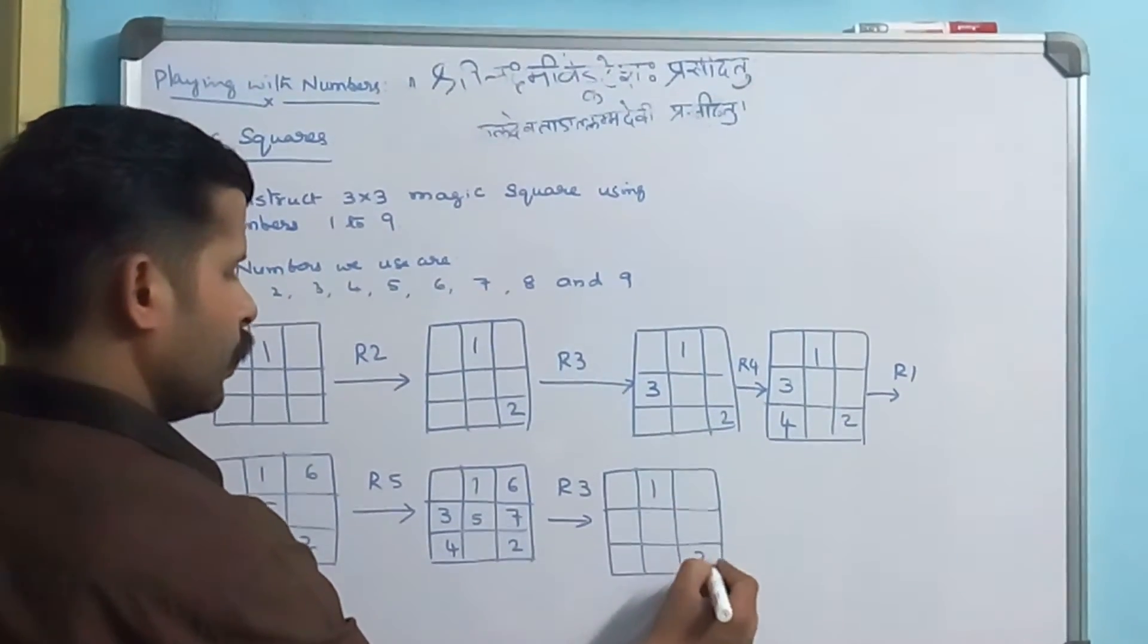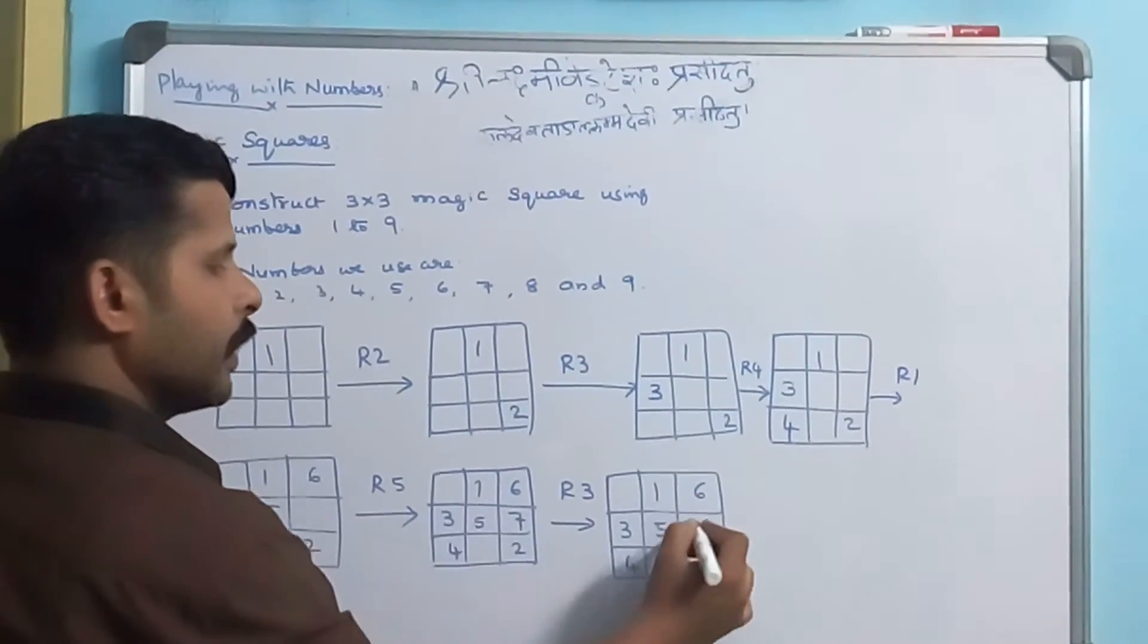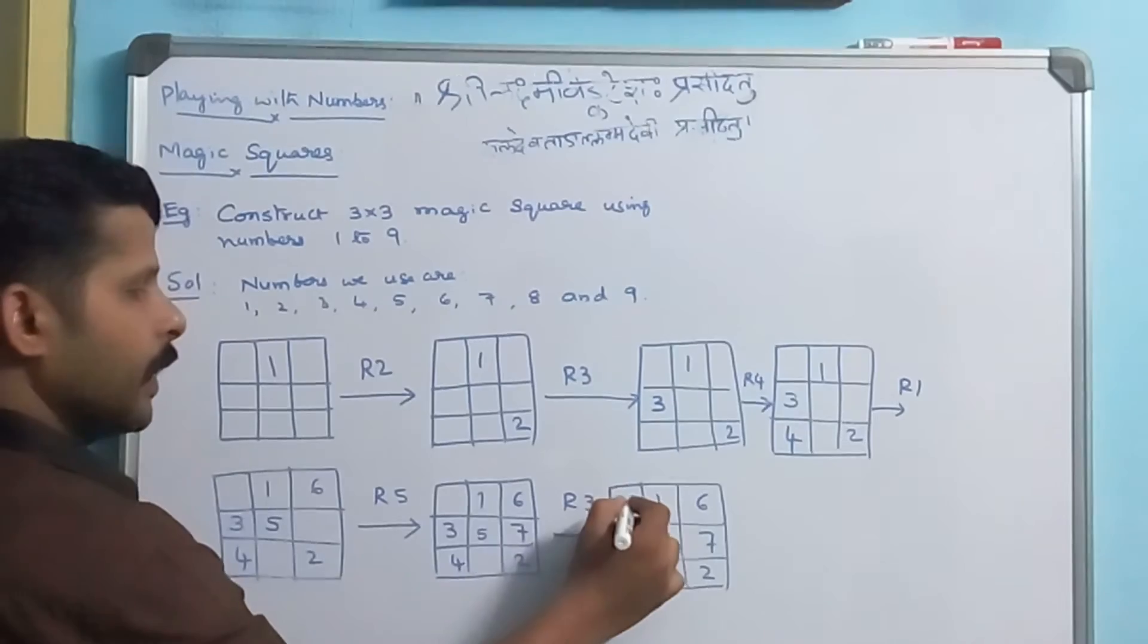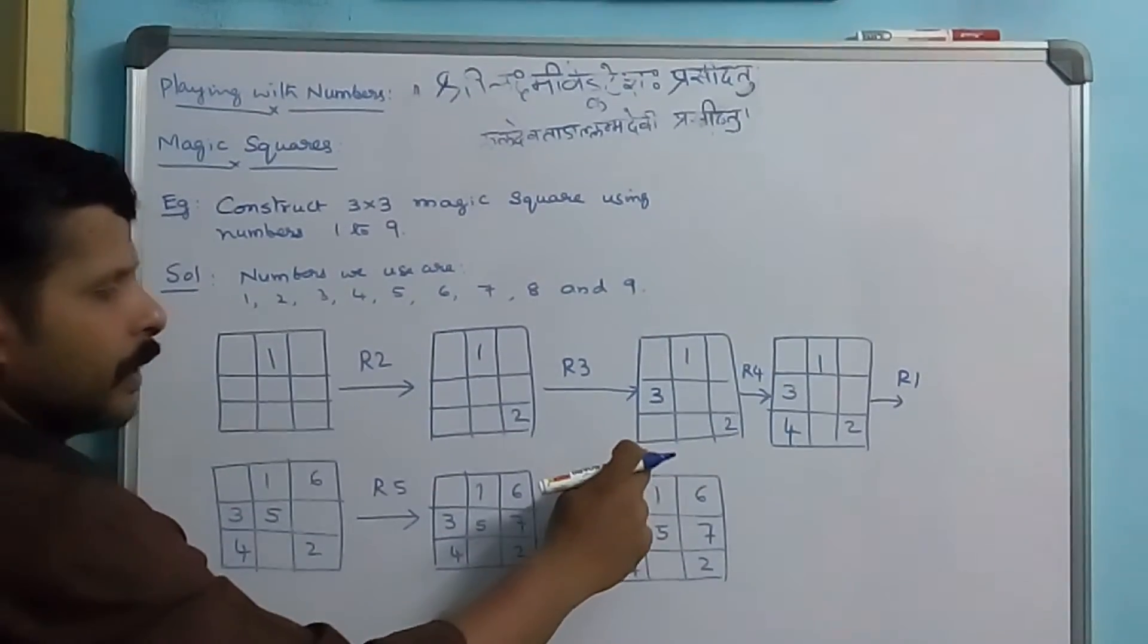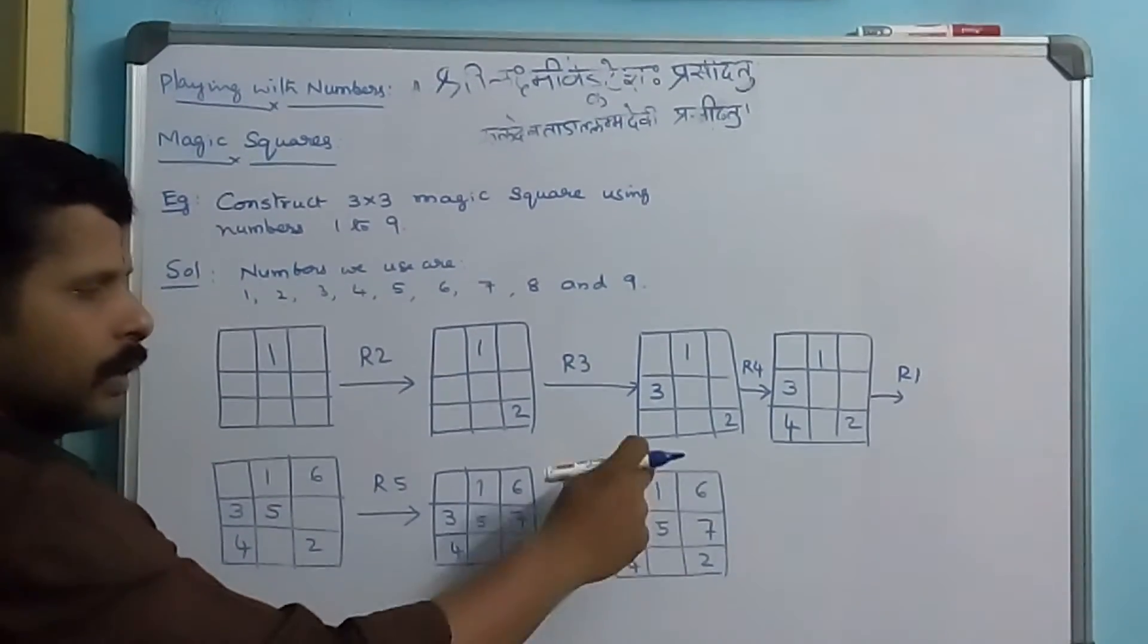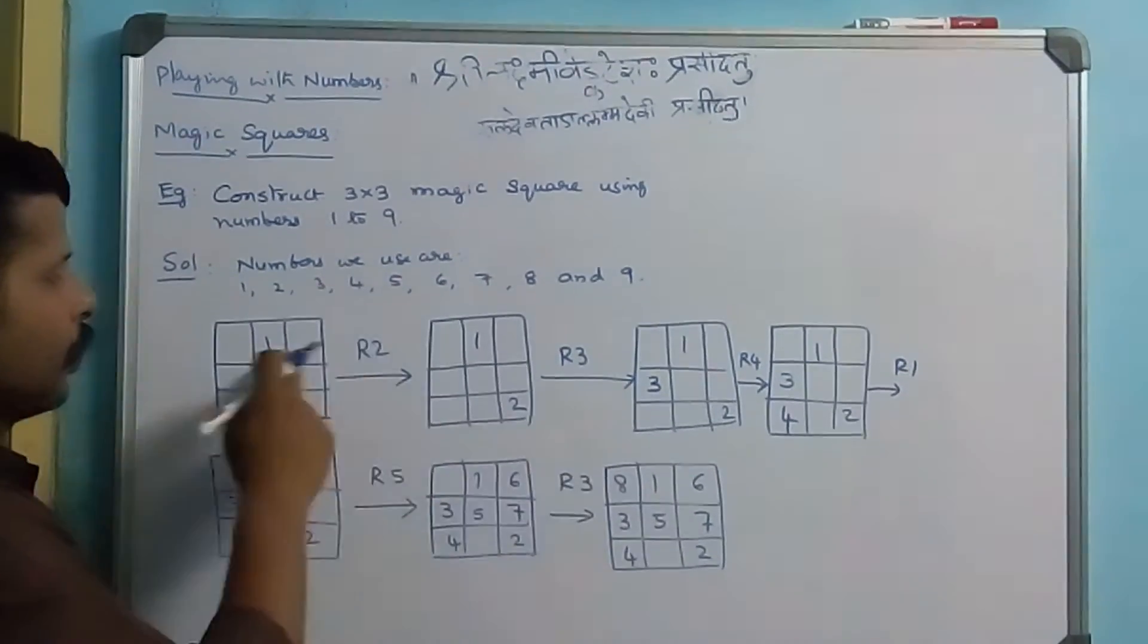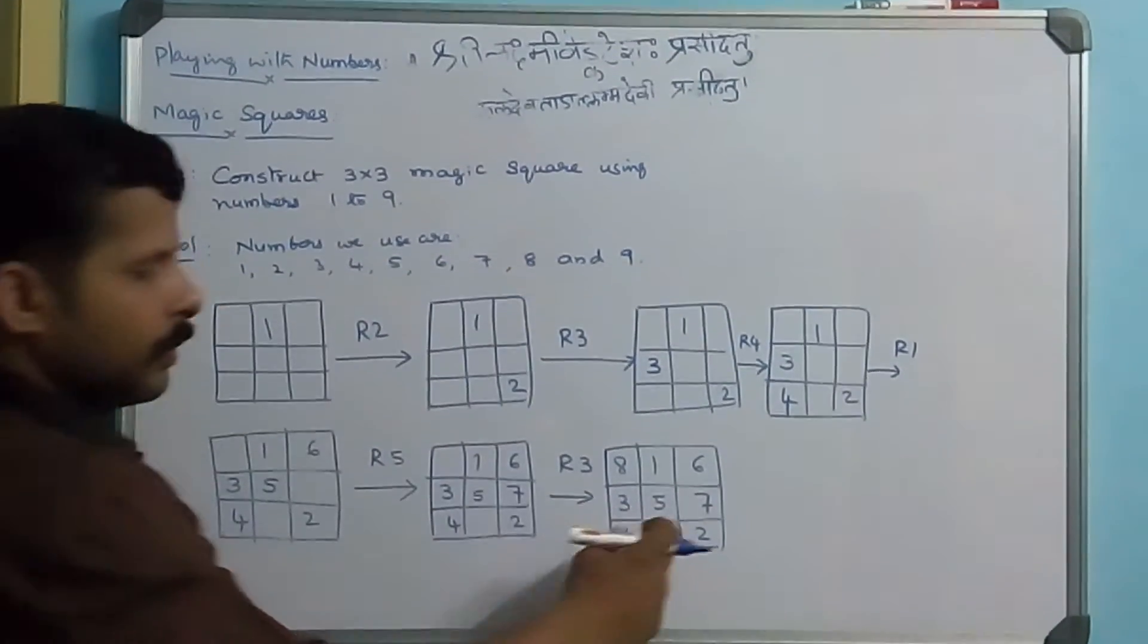Using rule 3, 8 is there. We don't have a next diagonal cell. And, the next column is there. So, using rule 1, rule 2, we fill the bottommost cell.